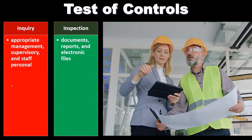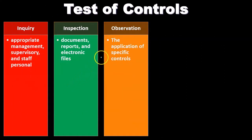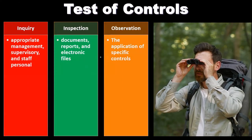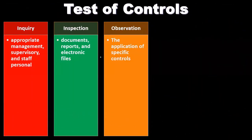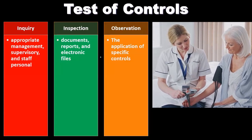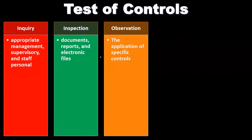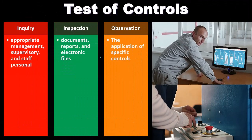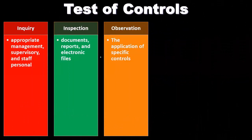We also have inspection of documentation, reports, and electronic files — we can actually go in and inspect those. We have observation of the application of specific controls. Controls are kind of like a bureaucracy: a system of things that have to be done — separation of duties, documentation that gets stamped as it goes through, approval processes. We can go through and observe whether or not these things are actually happening.